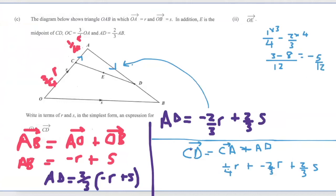So that means a quarter R minus two-third R, that will give us negative 5 over 12 R plus two-thirds S. And that's the answer for CD.